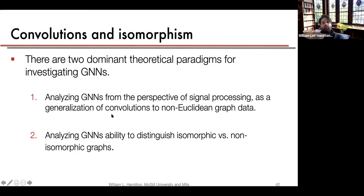Now I want to dive into some theoretical perspectives on GNNs. What's interesting is that graph neural nets were independently derived from two different perspectives: first, from a signal processing perspective generalizing convolutions to non-Euclidean data, and second, from graph theory via the problem of graph isomorphism testing.